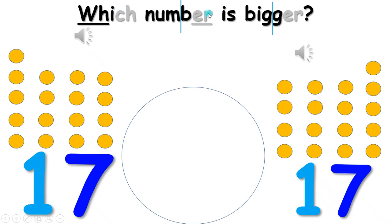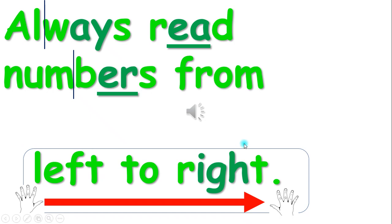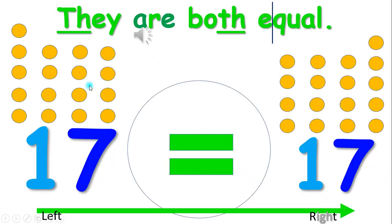Can you figure out which number is bigger? Is it 17 or 17? Both numbers are the same, and if they are the same, they're equal. They are both equal. And you read it as 17 equals 17.